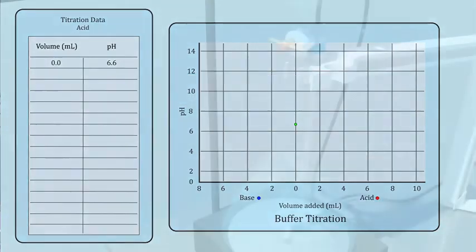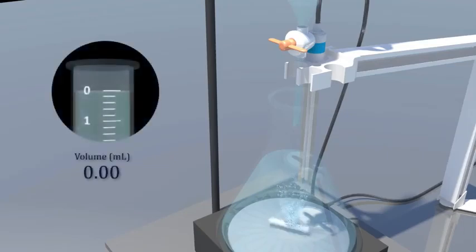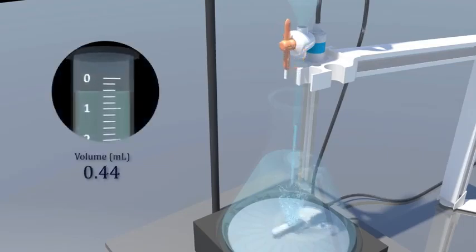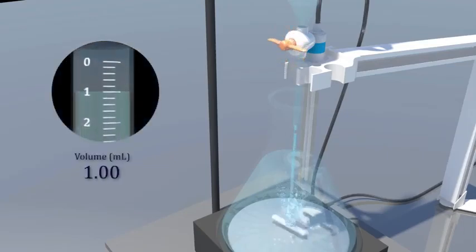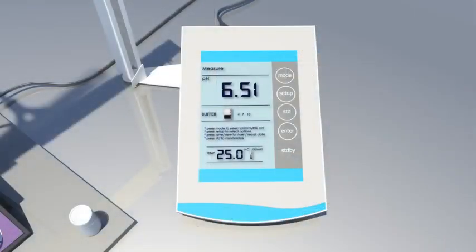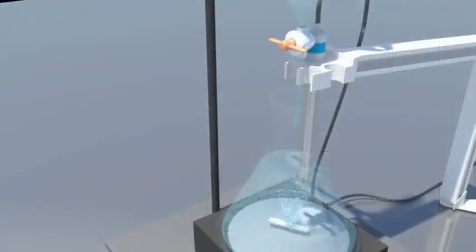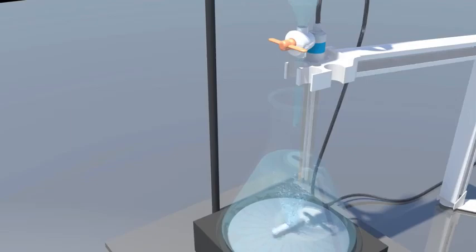Here you can see that the burette is full to the top with acid, and we turn the stopcock until it releases one milliliter of acid. Then we look at the pH, we wait for it to stop changing, and then we record that number in our data table and we plot it on our graph. In this experiment, the original pH of the buffer was 6.6, so adding one milliliter of the acid decreased the pH by 0.1.